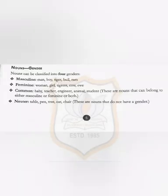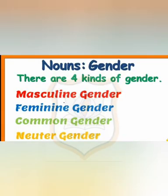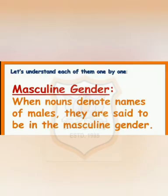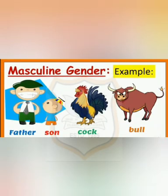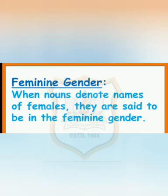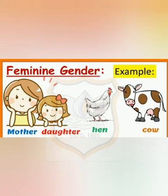The next part of nouns is gender. There are four kinds of gender: masculine gender, feminine gender, common gender, and neuter gender. When nouns denote names of males, they are said to be in masculine gender — for example, father, son, cock, bull. When nouns denote names of females, they are said to be in feminine gender — for example, mother, daughter, hen, cow.